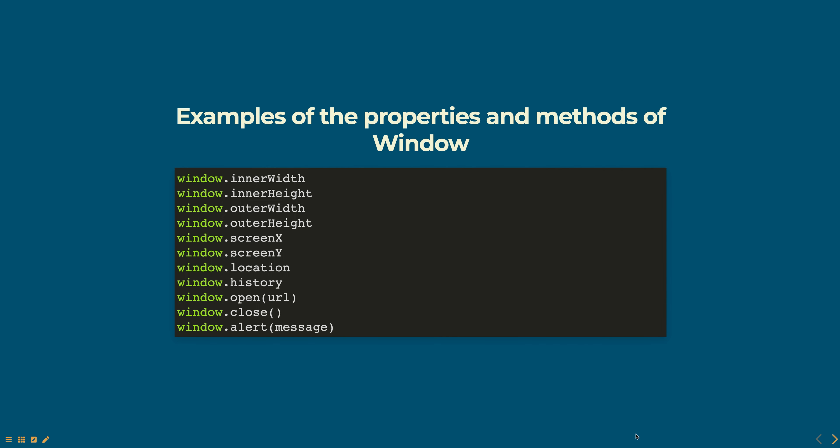Here are some examples of the properties and methods provided by the window object. Window.innerWidth gets the width of the browser window excluding the scroll bars. Window.innerHeight gets the height of the browser window excluding the scroll bars. Window.outerWidth gets the width including the scroll bars. Window.outerHeight gets the height including the scroll bars. Window.screenX gets the horizontal position and Window.screenY gets the vertical position of the current window. Window.location gets the current URL and Window.history gets the history of the window.